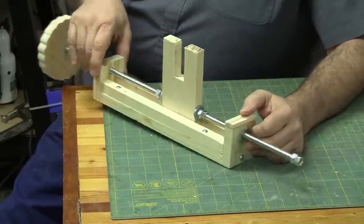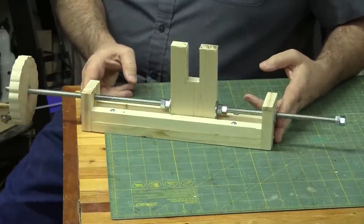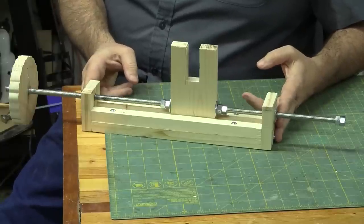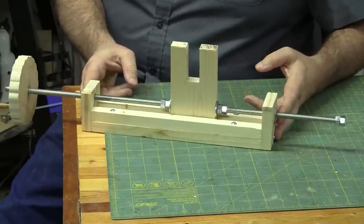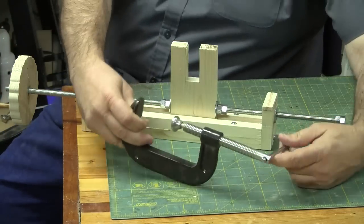The dimensions I came up with simply so they would fit underneath the scroll saw onto the stand. I use these C-clamps to hold it onto the stand, and they work great.